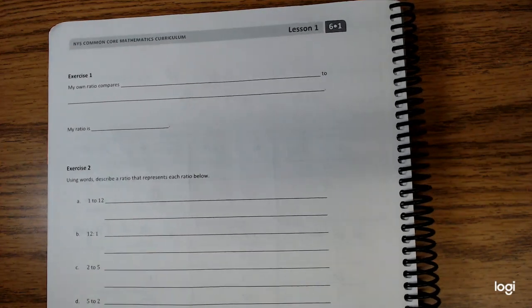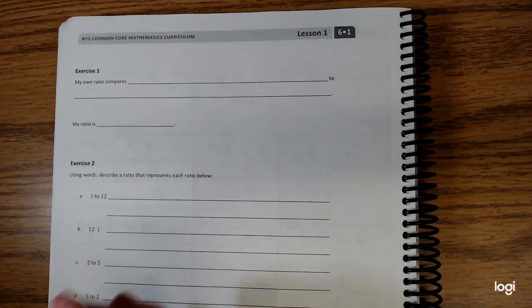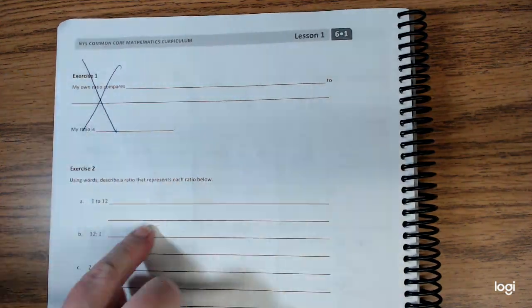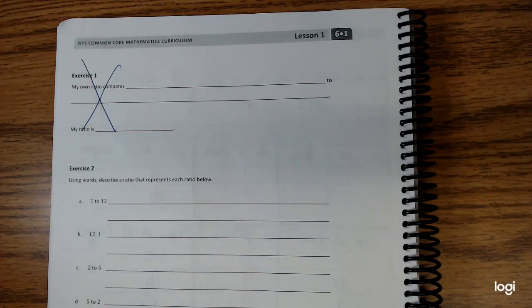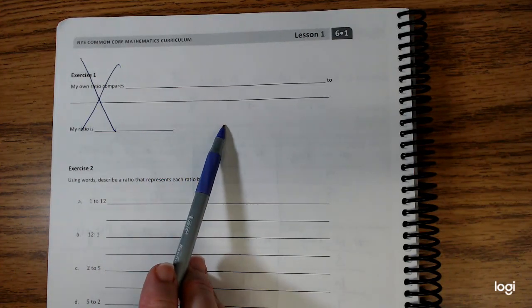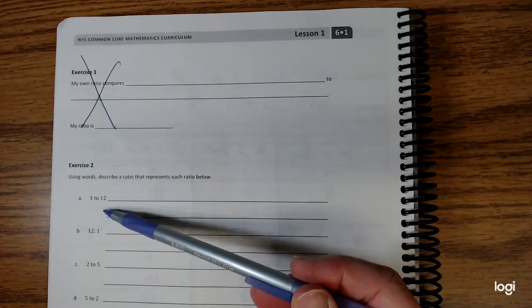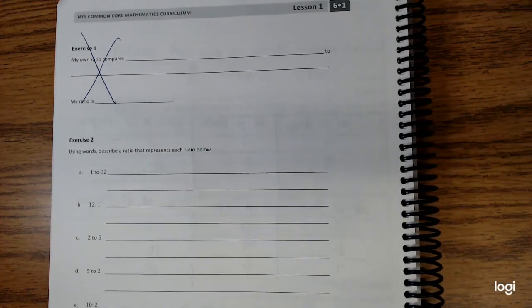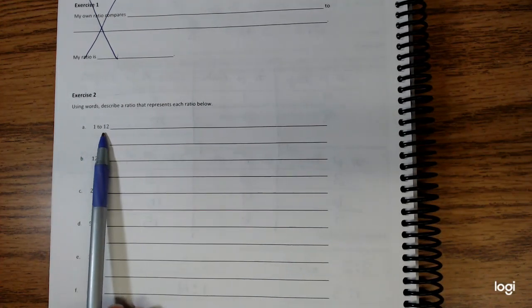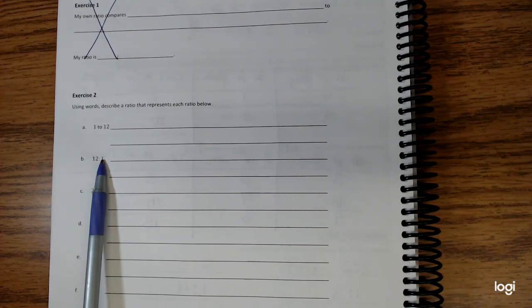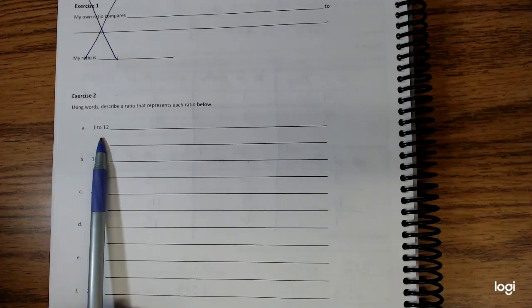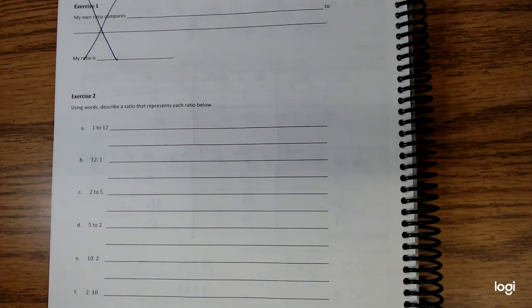Since we're still in remote learning style right now, we're going to cross out exercise one and move down here. Ratios can be written for all kinds of different situations. For example, if everyone was in class, I could take a survey asking how many of you have at least one sibling, and I could make a ratio of students who have one sibling to students who have more than one or no siblings. On exercise two, we have many different ratios. They're basically the same numbers for A and B, just reversed.